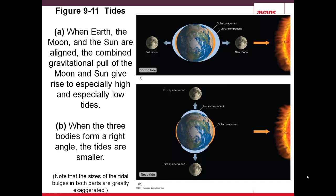In these two figures you see the effect that the Sun and the Moon have on waves. The spring tide happens twice a month during the full and the new moon. Neap tides are when the Moon pulls in the opposite direction from the Sun.